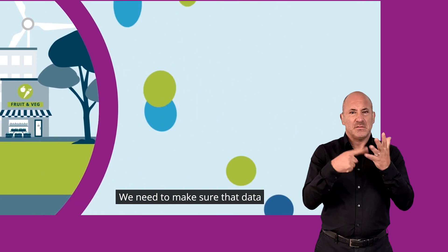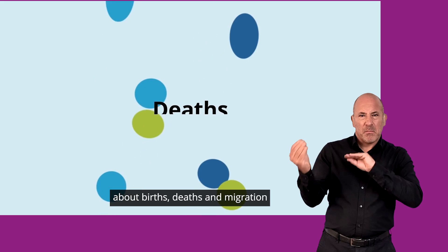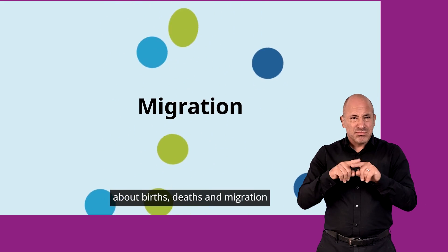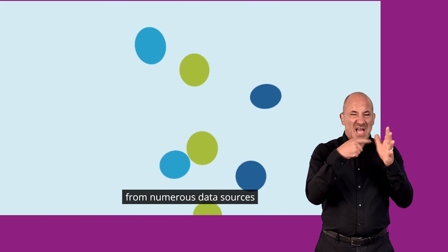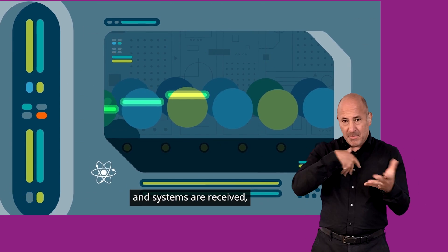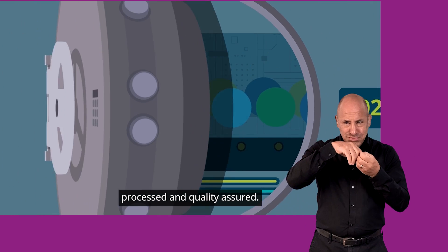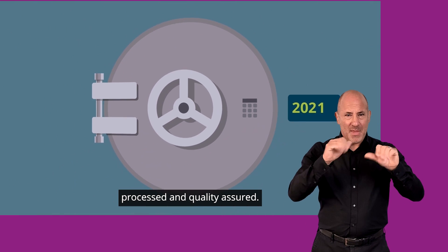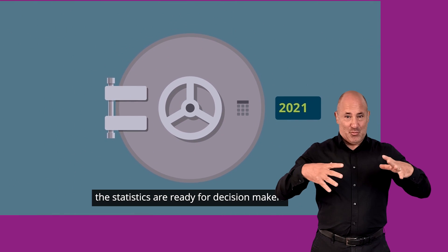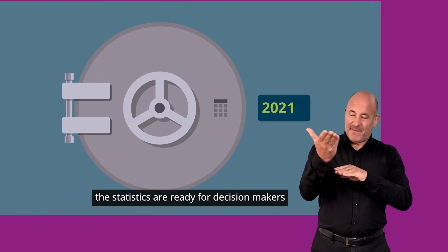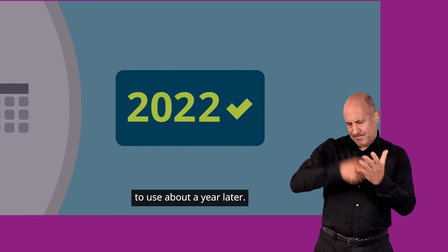We need to make sure that data about births, deaths and migration from numerous data sources and systems are received, processed and quality assured. When this is done, the statistics are ready for decision makers to use about a year later.